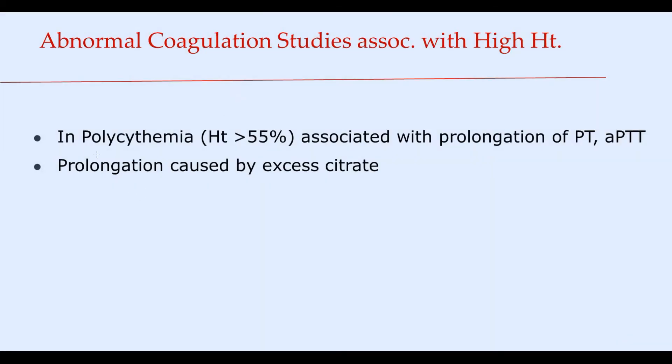Sometimes in patients with polycythemia with hematocrit greater than 55%, blood coagulation studies show prolongation of partial thromboplastin time and prothrombin time. It turns out this prolongation is caused by excess citrate, which is related to the mechanics of how these coagulation studies are performed.